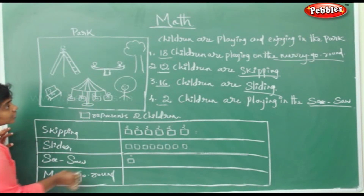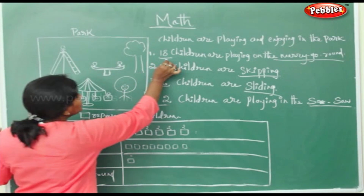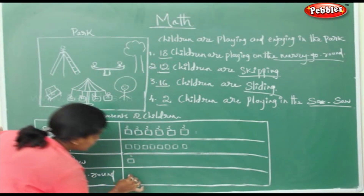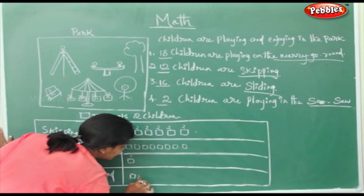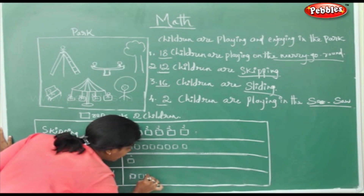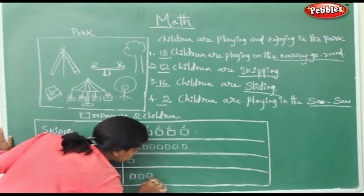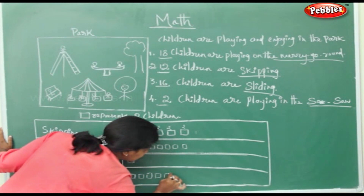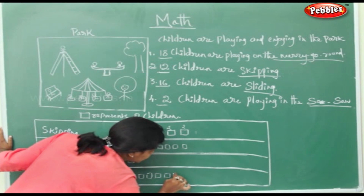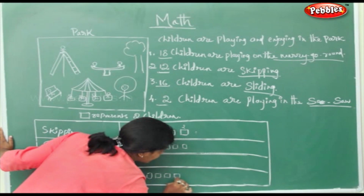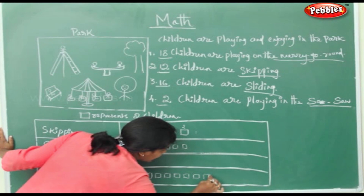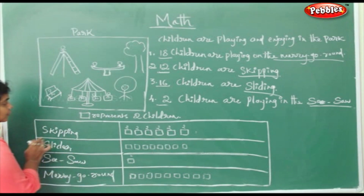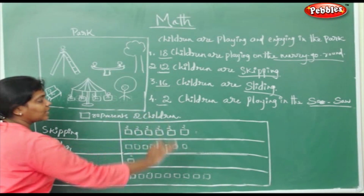Merry-go-round — how many children? 18 children are playing on the merry-go-round. Counting boxes: 2, 4, 6, 8, 10, 12, 14, 16, 18 — that's 9 boxes. This is how you draw a picture graph.